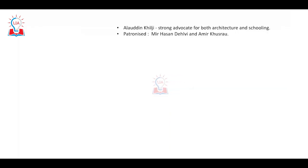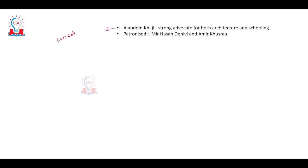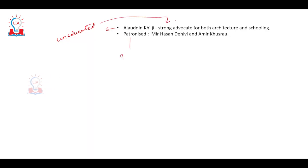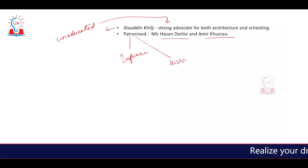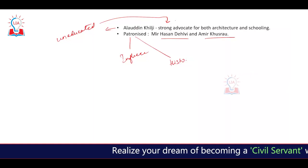One important thing with respect to the Kilji kings — one of the prominent ones being Alauddin Khilji — is that even though he was uneducated, he laid extreme stress on architecture and schooling. He was patronized and influenced by Amir Hassan and Amir Khusrau, and there were a good number of historians present to ensure that history spoke about him.